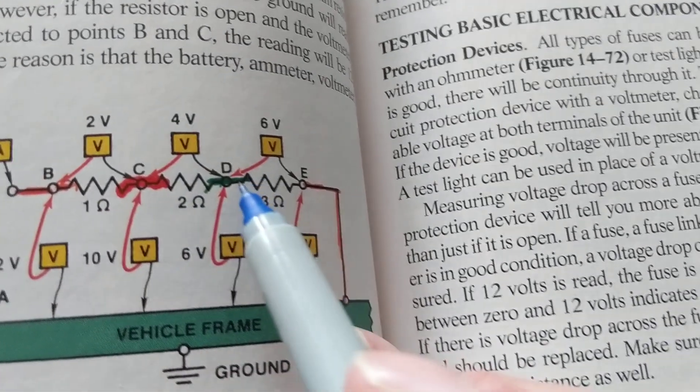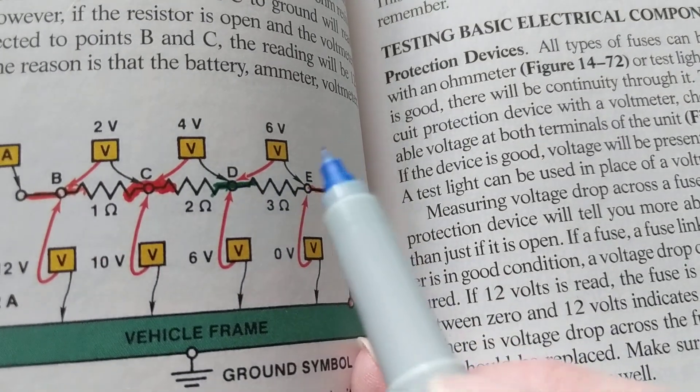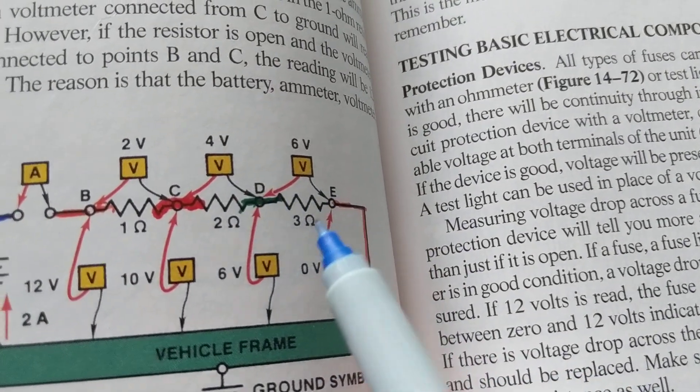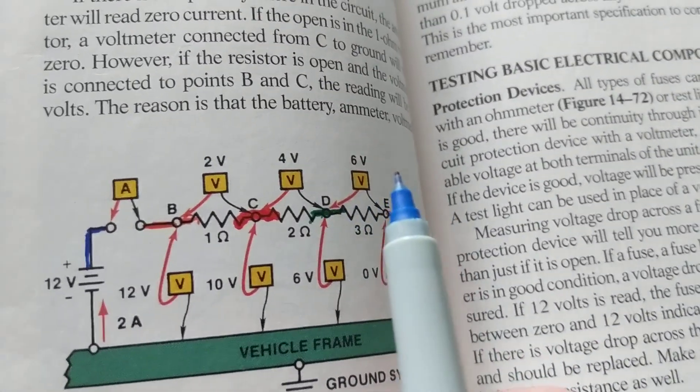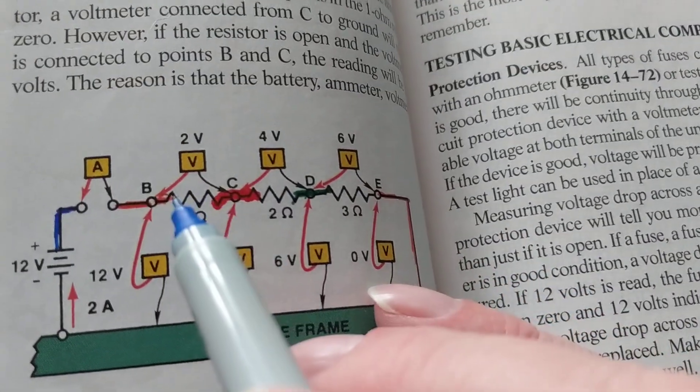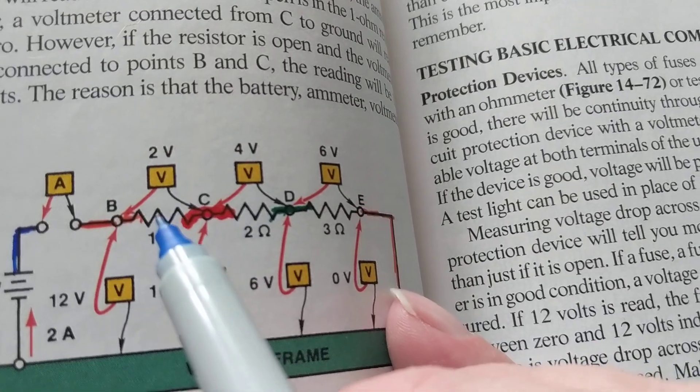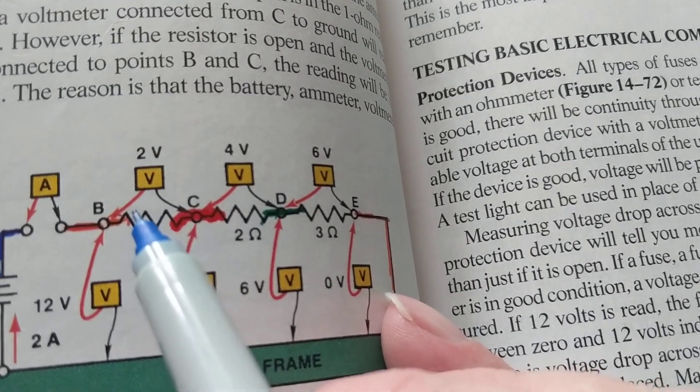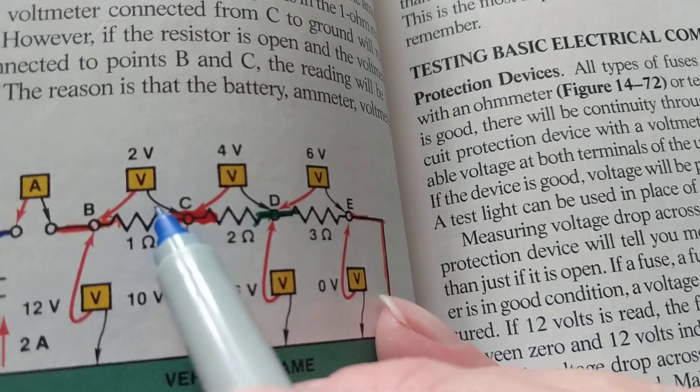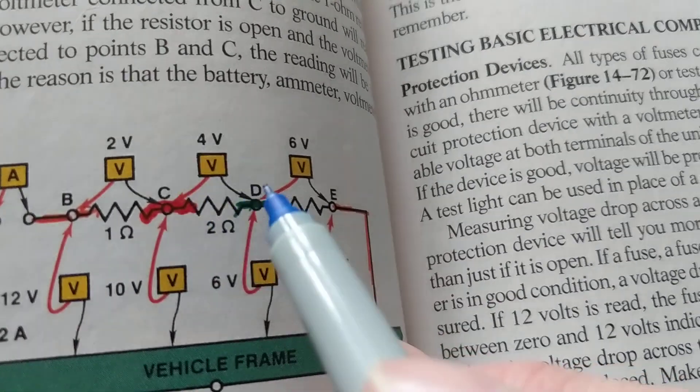If you go from D to E, you're going to measure 6 volts. That's good and dandy, but you know what you're doing? You're constantly moving both probes of the meter back and forth. Do you see that? I'm taking the red one, the black one, putting it, the red one, the black one, the red, the black one - constantly, constantly doing that.